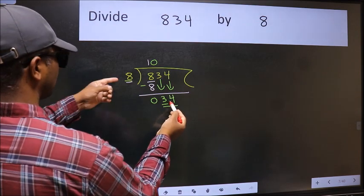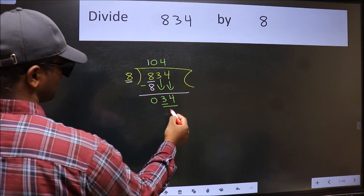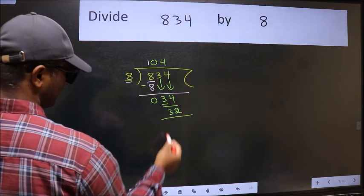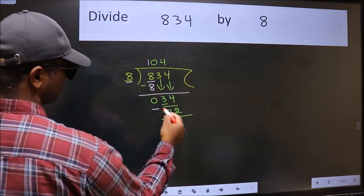A number close to 34 in 8 table is 8 fours 32. Now we should subtract. We get 2.